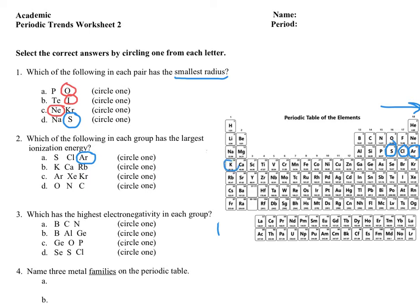For potassium, calcium, and rubidium: to get the highest ionization energy, we need the smallest element. As I go up and over I get smaller in size, so calcium is the smallest element and therefore has the highest ionization energy.